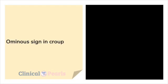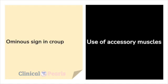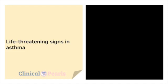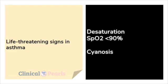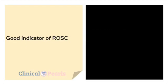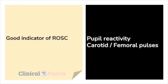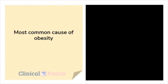Ominous sign in croup: use of accessory muscles. Life-threatening signs in asthma: desaturation with SpO2 less than 90% and cyanosis. Good indicator of ROSC (return of spontaneous circulation): pupil reactivity and presence of carotid or femoral pulses. Most common cause of obesity: insulin resistance.